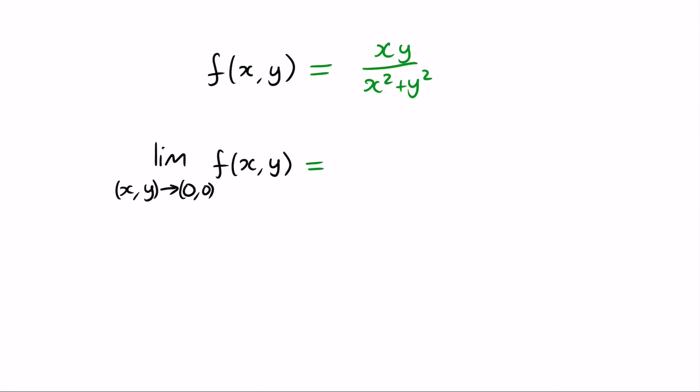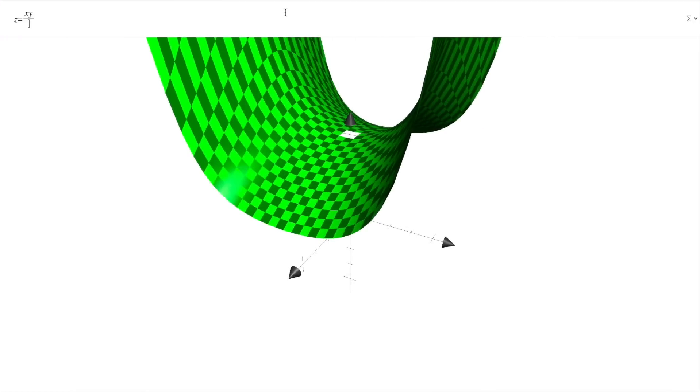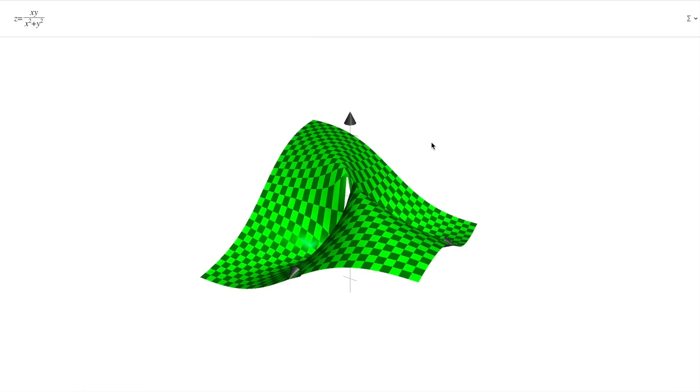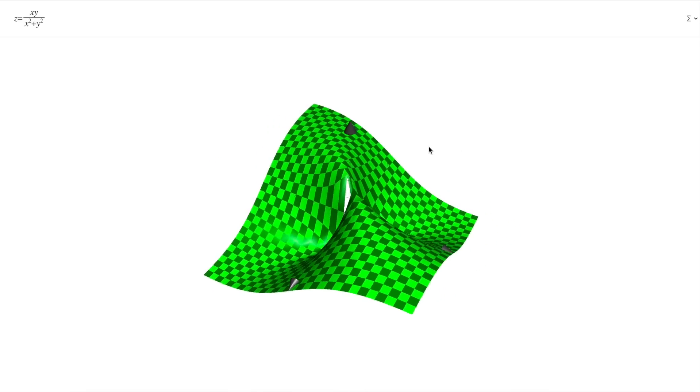Here's a function where the limit doesn't exist. If we approach 0 along the line y equals x, then the function simplifies to x squared over 2x squared, which is equal to 1 half for every non-zero value of x, meaning the limit equals 1 half. However, if we approach 0 along the line y equals negative x, then we get the same thing but with a minus sign, and so the limit equals minus 1 half. Since these two paths disagree, the limit doesn't exist. We can see this on the graph as well, approaching 0 along one of the lines diagonal to the axis gives a positive number, while the other diagonal gives a negative number.